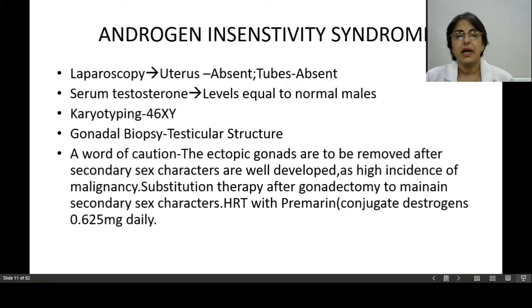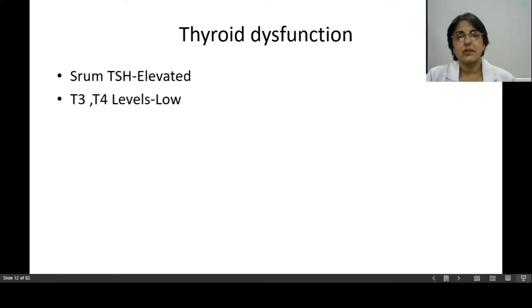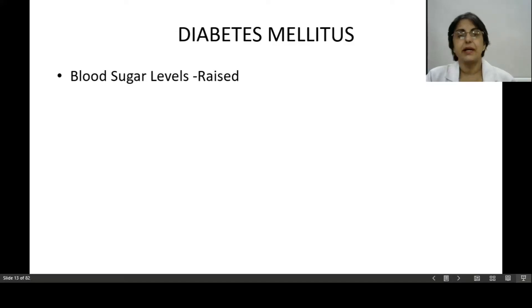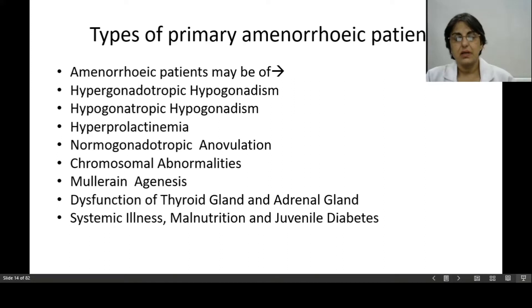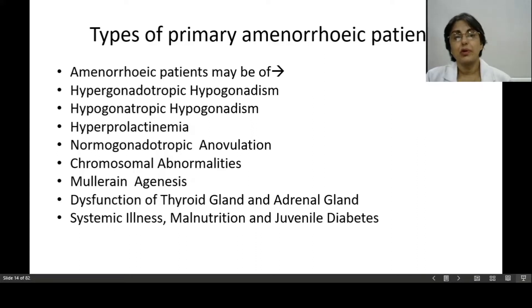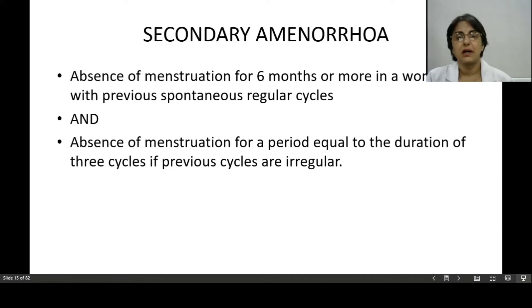In androgen insensitivity syndrome, if ectopic gonads are to be removed, the chances of malignancy are less once secondary sex characteristics are well developed. Thyroid dysfunction and juvenile diabetes are also causes of primary amenorrhea. In summary, primary amenorrhea patients can be classified as: hypergonadotrophic hypogonadism, hypogonadotrophic hypogonadism, hyperprolactinemia, normogonadotrophic anovulation, chromosomal abnormalities, Mullerian agenesis, thyroid or adrenal dysfunction, juvenile diabetes, or malnutrition.